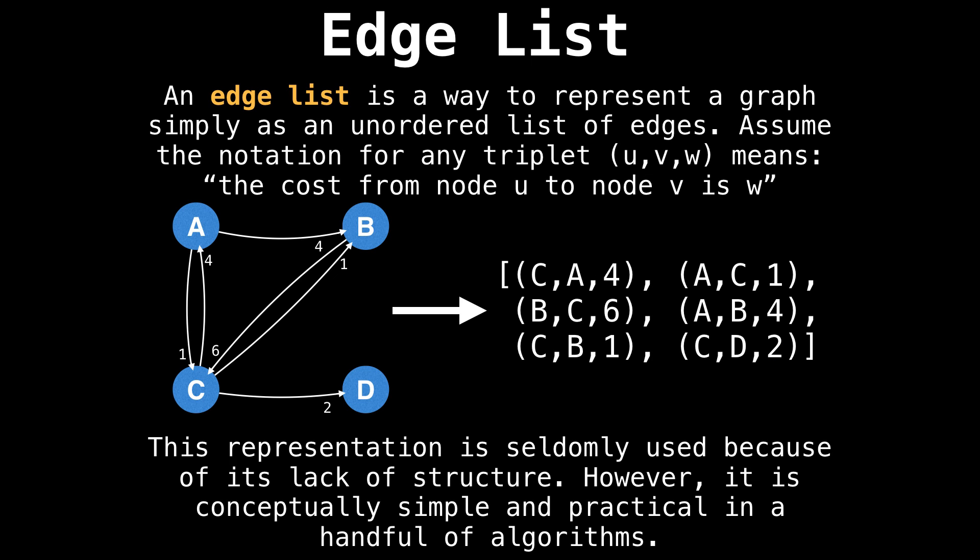The last representation I want to talk about is the edge list. An edge list is a way to represent a graph simply as an unordered list of edges. Basically, it's exactly what it sounds like: a list of edges. Assume that the notation for any triplet U, V, W means the cost from node U to node V is W. So for this graph, the edge list is simply a list of six edges represented as those triplets.